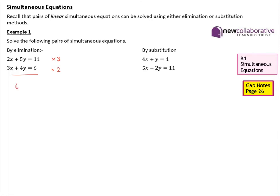If we do that, that gives us 6x plus 15y equals 33 for the first one, and 6x plus 8y equals 12 for the second one. Now we can subtract the equations from one another. 6x subtract 6x eliminates the x terms, which is why it's called the elimination method. 15y subtract 8y is 7y, and 33 subtract 12 is 21.